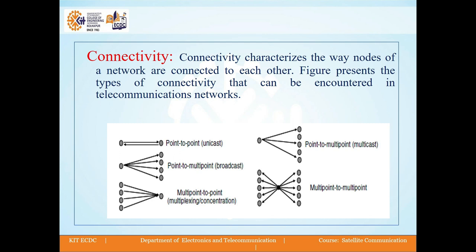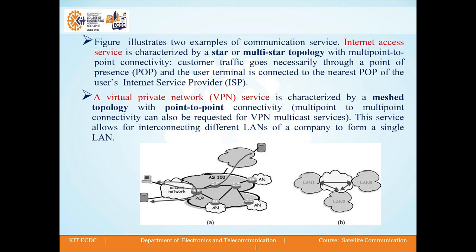Then multipoint-to-point connectivity is called multiplexing or concentration, and the last one is multipoint-to-multipoint. Internet access service is characterized by a star or multi-star topology with multipoint-to-point connectivity, where customer traffic goes necessarily through a point of presence (POP), and each user terminal is connected to the nearest POP of the user's internet service provider (ISP).